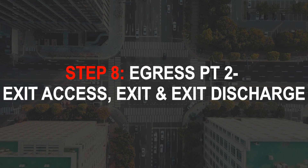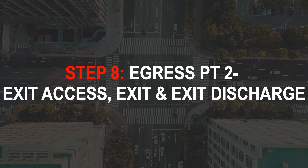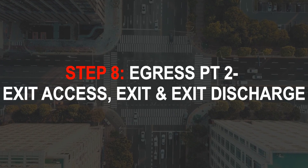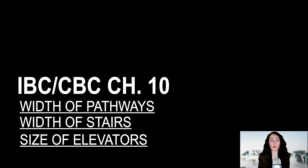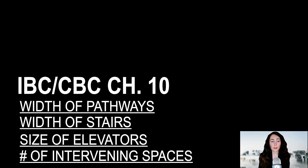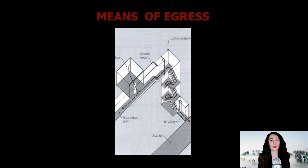Step eight is all about egress. In this step, you're calculating how wide corridors are, how wide stairs need to be, elevators, or figuring out the number of spaces allowed to exit through before you reach a protected exit. You're calculating how far your nearest exit can be from the most remote point of a room in a building. You will eventually learn to become best friends with chapter 10, and it will help you design all three portions of the egress system — namely the exit access, the exit, and the exit discharge.